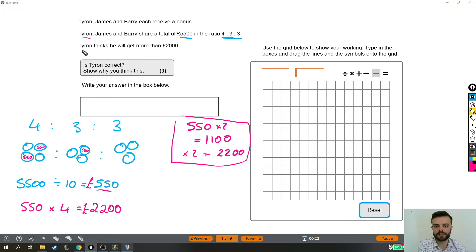So that is how much Tyron is going to get because he gets four parts of the ratio. Each part is worth £550. So his four parts is worth £2,200.